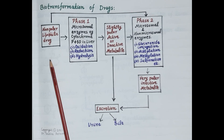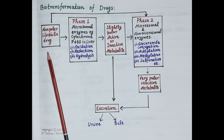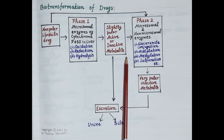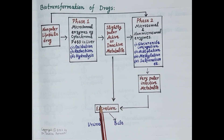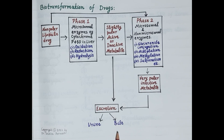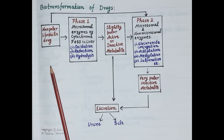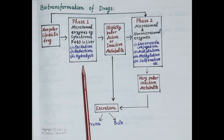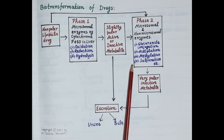Biotransformation is a process by which a lipophilic, lipid-soluble drug is metabolized and converted to a polar or water-soluble metabolite that is excreted from the body, primarily in the urine or in the bile. These biotransformation reactions are of two types: phase 1 reactions and phase 2 reactions.